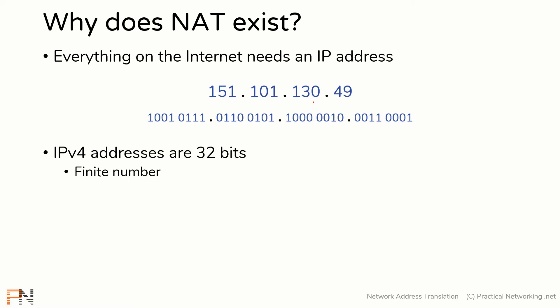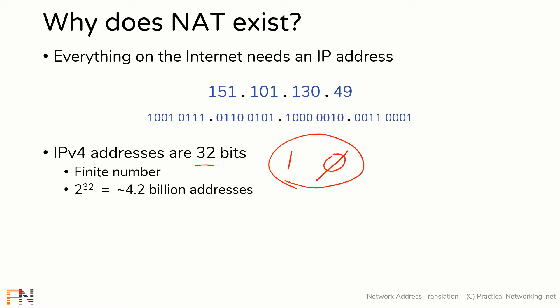Every IP address is simply a unique combination of 32 1s and 0s, which means there is a finite number of IP addresses in the world. Since we have 32 bits and each can be a 1 or a 0, we calculate the total combinations by taking 2 raised to the 32nd power — giving us the total number of addresses in IPv4, which is 4.2 billion.